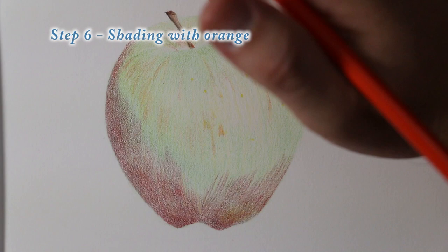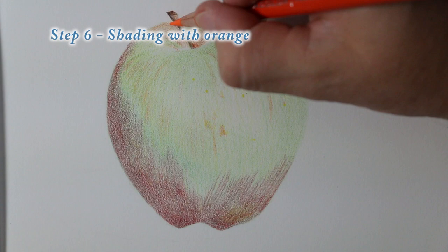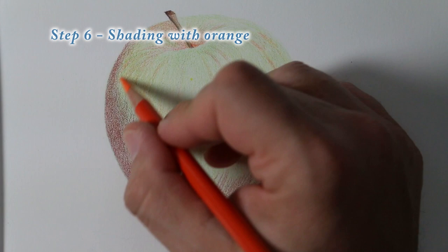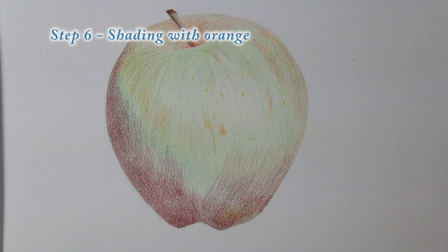In step six I'm using orange and I'm adding orange to the entire apple. Again I'm paying very close attention to the direction of my strokes because I want to convey that there is some body in the girth of that apple right there in the middle of the apple.